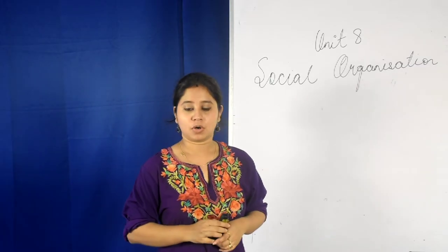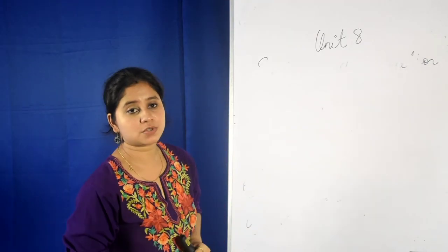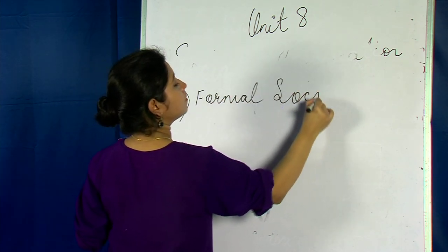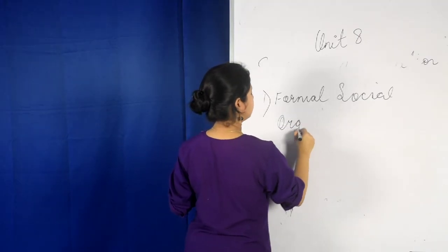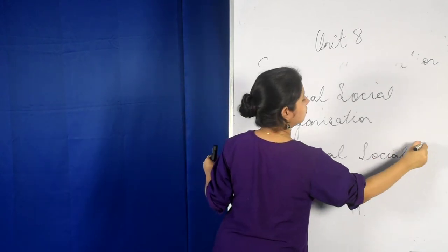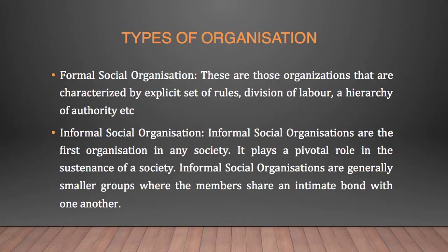We have two types of social organization. First is formal social organization, and the second is informal social organization. Formal organizations are those characterized by specific rules, regulations, division of labor, hierarchy, and authority. The example of a bank or an educational institute makes this clear. Every responsibility has been clearly stated in the rules and regulations of that organization.